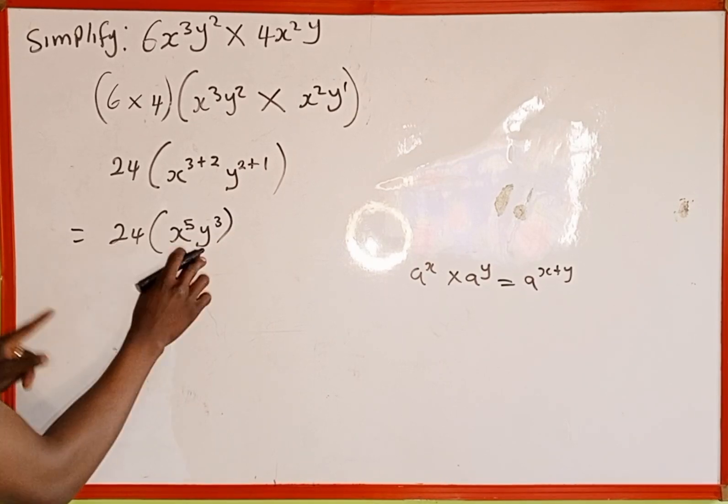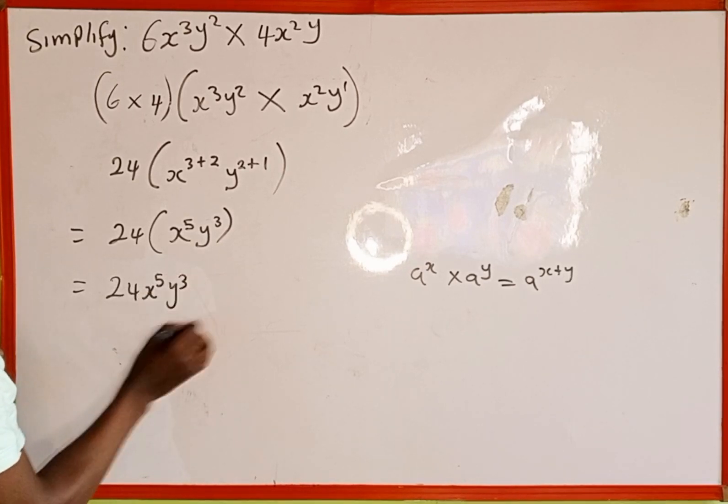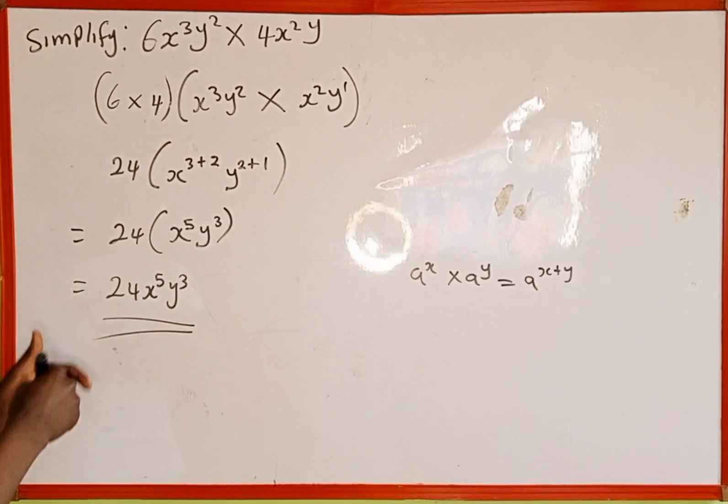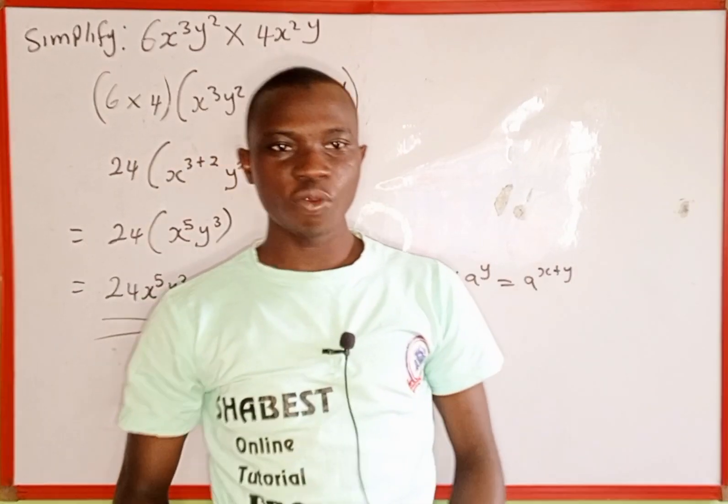When we multiply 24 by this, we get 24x⁵y³. So this is the simplification of the expression. Thank you for watching, and please don't forget to subscribe to my channel.